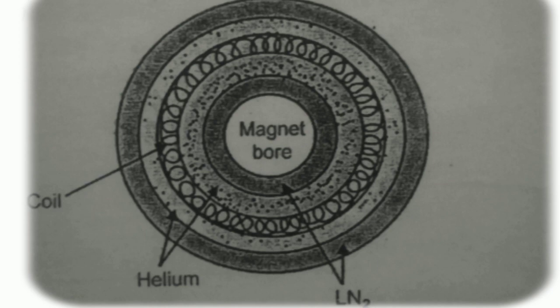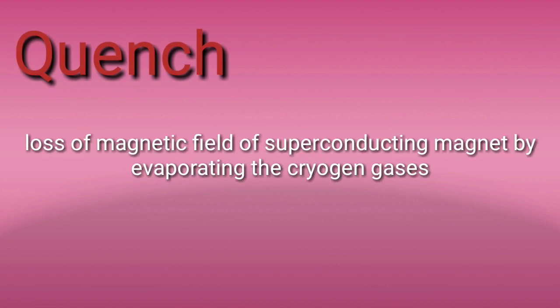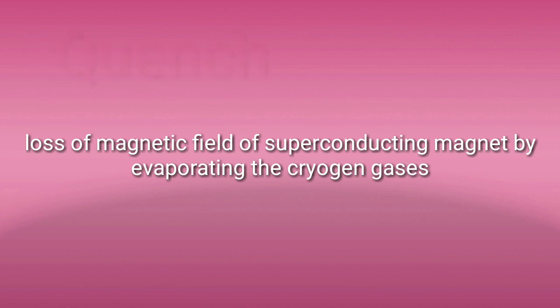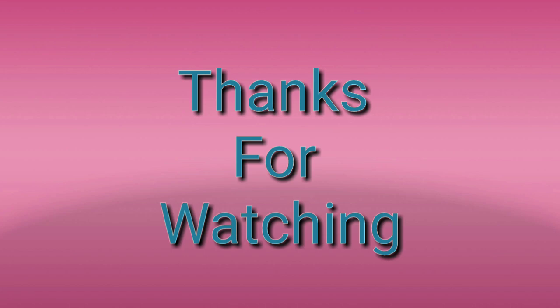The last topic to remember is quench or quenching. In this process, the magnetic field of the superconducting magnet is lost or discharged by evaporating cryogen gases — cryogen gases being helium and nitrogen. Isme wapas resistance ko increase kiya jata hai taaki cryogen gas evaporate ho jaye aur quenching possible ho jaye. Like and thanks for watching.